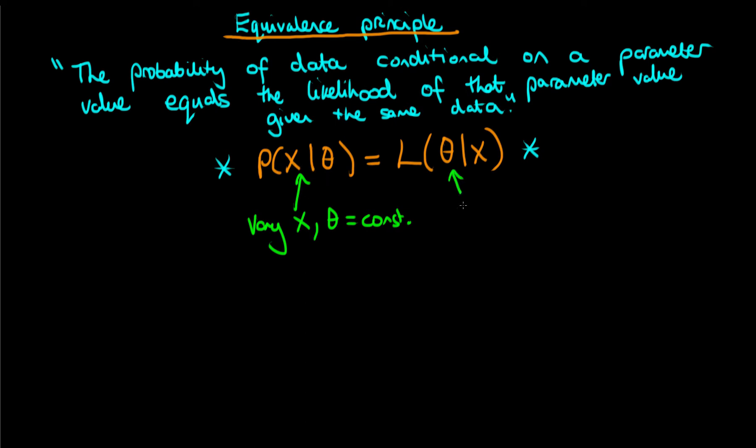Whereas if by contrast we vary theta and we hold data constant, then we've seen that the object does not behave as a valid probability distribution. In other words it doesn't integrate if it's continuous or sum if it's discrete to one, and hence we call it a likelihood to avoid the ambiguity. Because under those circumstances the object does not behave as a valid probability distribution.